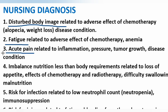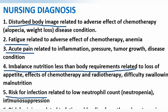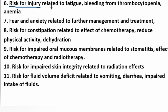Number 4 - Imbalanced nutrition, less than body requirements, related to loss of appetite, effects of chemotherapy and radiotherapy, difficulty in swallowing, and malnutrition. Number 5 - Risk for infection related to low neutrophil count and immunosuppression. Number 6 - Risk for injury related to fatigue, bleeding from thrombocytopenia, and anemia.